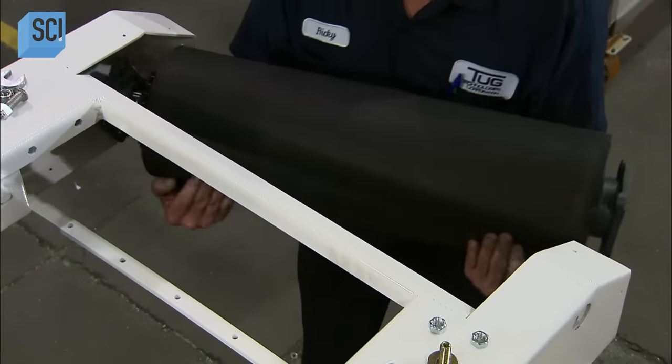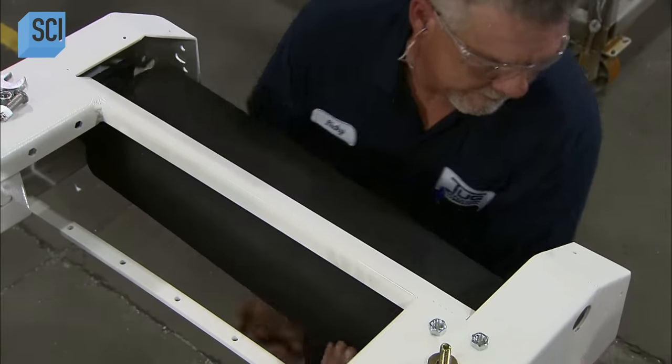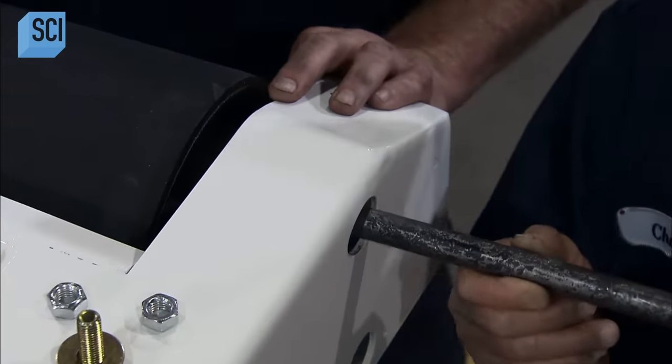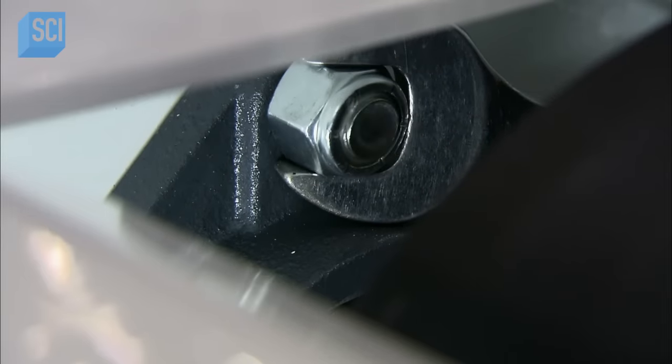The motor rotates two large metal rollers, one at the front of the frame, the other at the rear. The belt wraps around these rollers, so that when they turn, the belt moves.